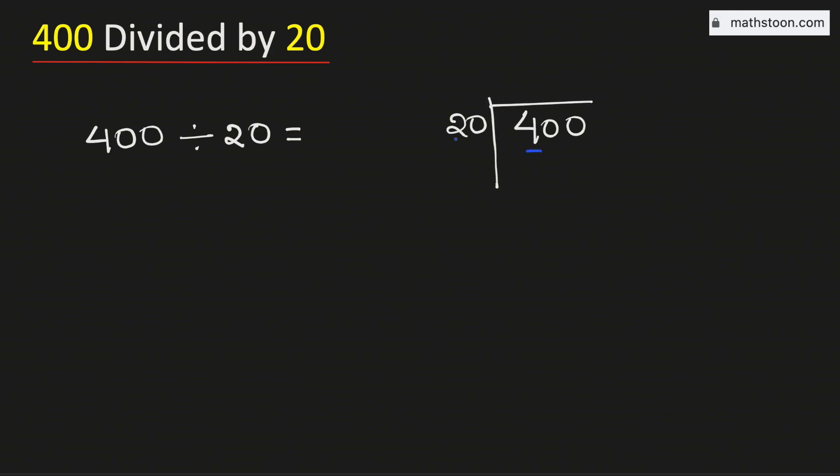See that 4 is less than 20, so we will consider the number 40. We know that 20 times 2 is 40.